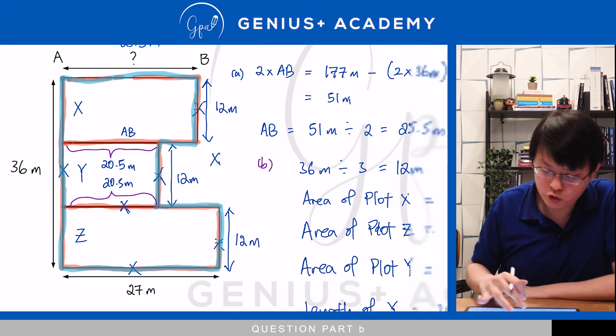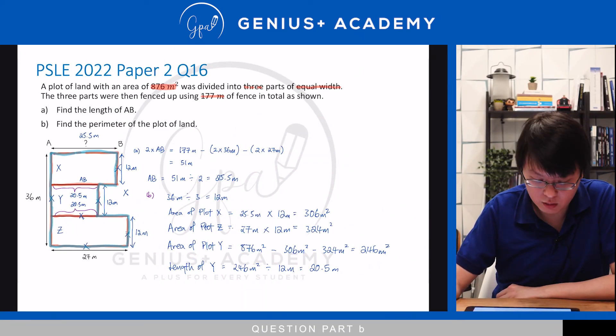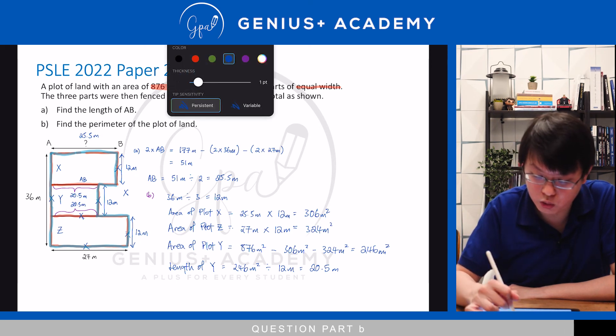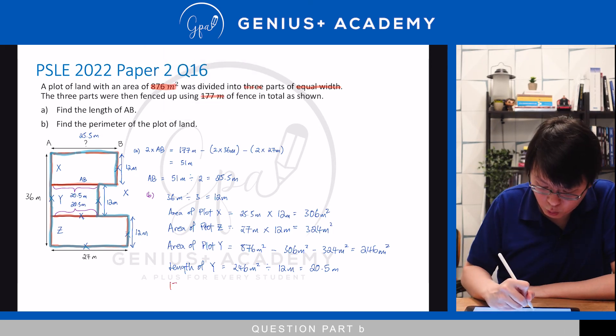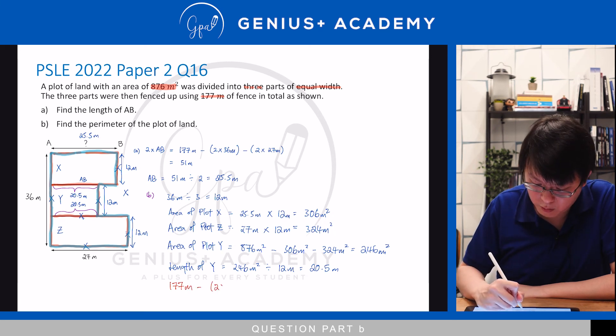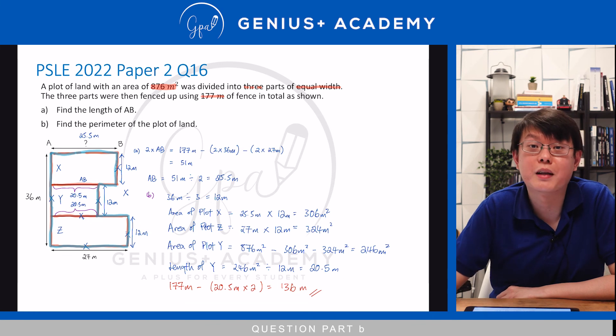From the diagram, you should realise that once I have the length of y, to find the perimeter of the plot of land, it is simply your total fencing. 177 metres, subtract away 20.5 metres times 2. And that will give you a total perimeter of 136 metres. So, that will be our final answer.